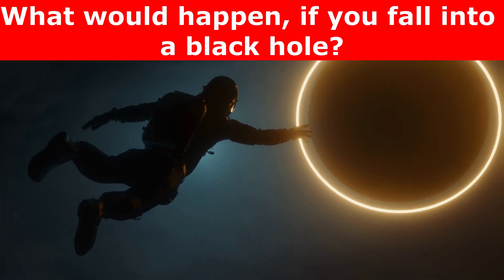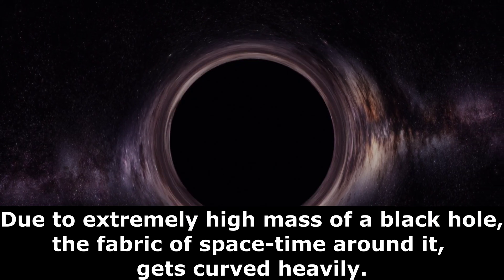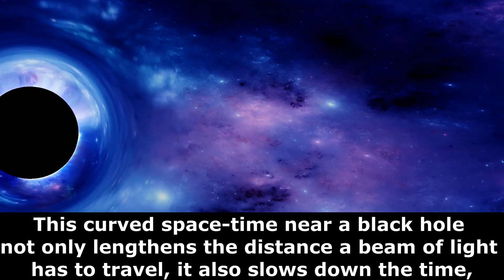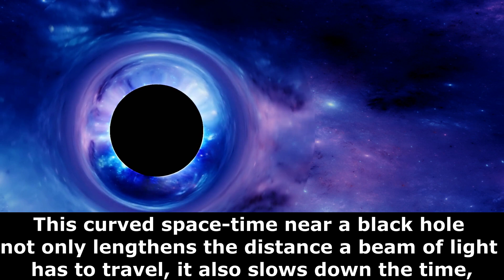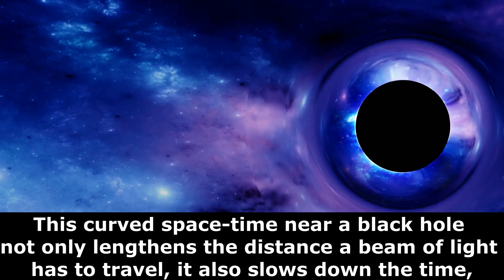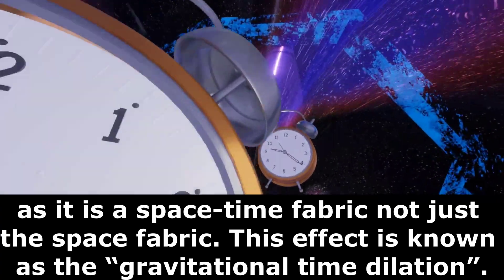What would happen if you fall into a black hole? Due to extremely high mass of a black hole, the fabric of space-time around it gets curved heavily. This curved space-time near a black hole not only lengthens the distance a beam of light has to travel, it also slows down the time as it is a space-time fabric, not just the space fabric.